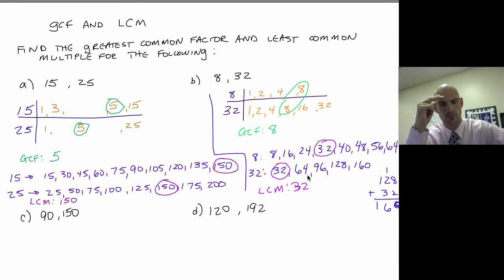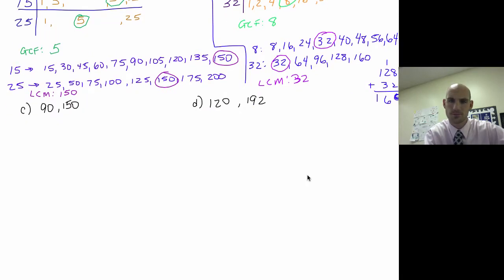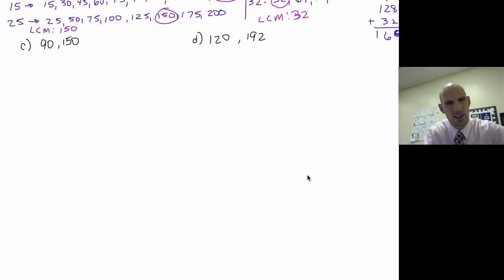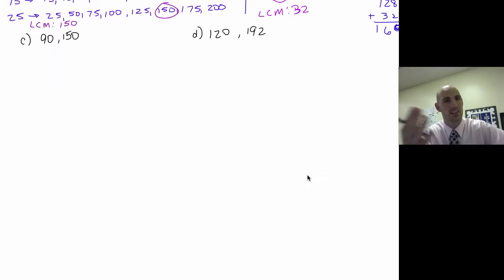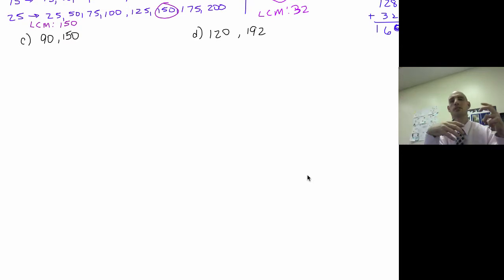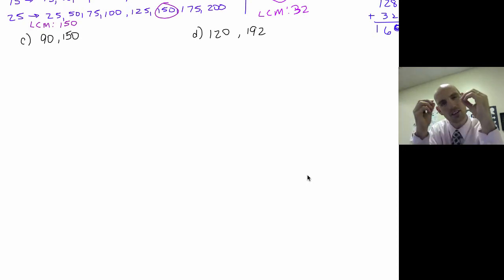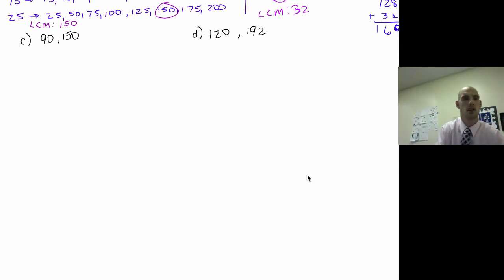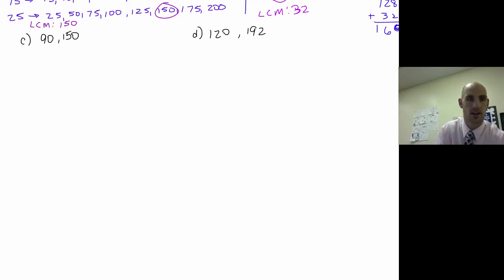That doesn't seem like a lot of work here, but they really are a lot of work — especially when we get to numbers like 90 and 150. Does 4 go in? What about 6? What about 9? All of these things get fuzzy. So I want to show you a shortcut method for finding LCM and GCF. It's called the upside-down birthday cake method.